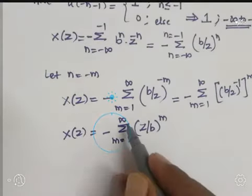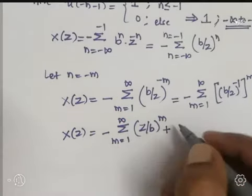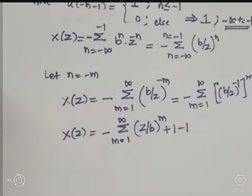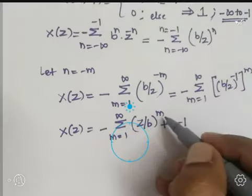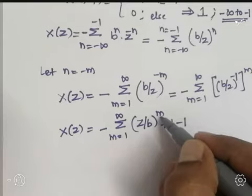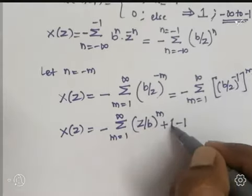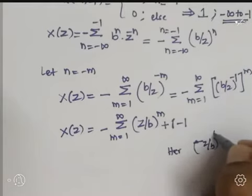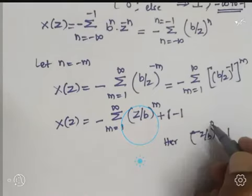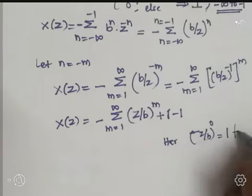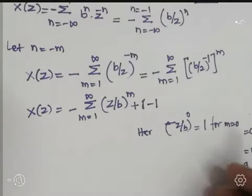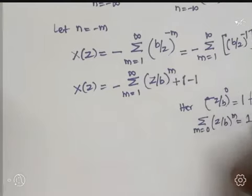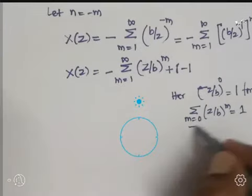To correct for the limit starting at 1 instead of 0, I add and subtract 1. Substituting M = 0 gives (Z/B)^0 = 1. So summation from M = 0 of (Z/B)^M equals 1 when M = 0. This allows conversion from the 1-to-∞ sum to a 0-to-∞ sum.